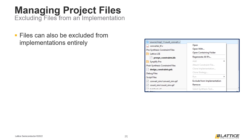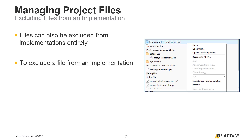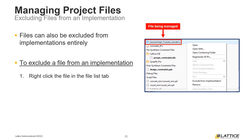Another way users can manage the files in their Radiant projects is to exclude or include files from an implementation entirely. Excluding a file from an implementation is functionally the same as excluding it from both synthesis and simulation. To exclude a file from an implementation, right-click the file you want to exclude from the File List tab and select Exclude from Implementation from the drop-down. It should be noted that this exact process can be repeated to include a file that has been excluded back into an implementation.